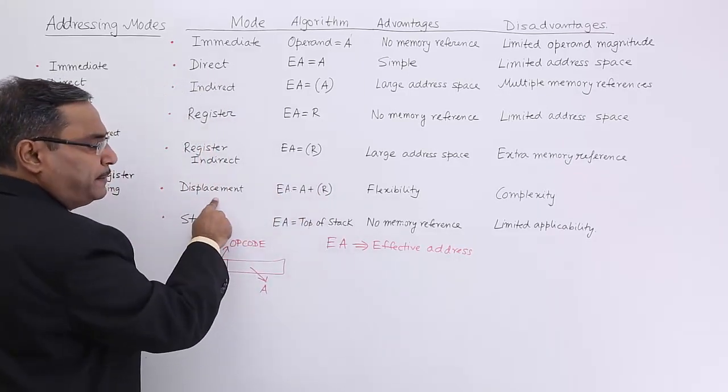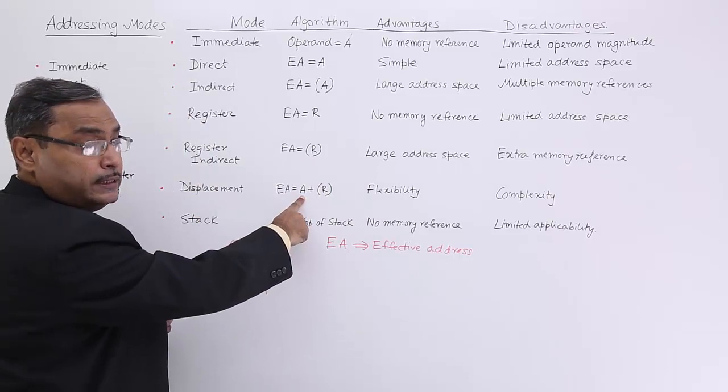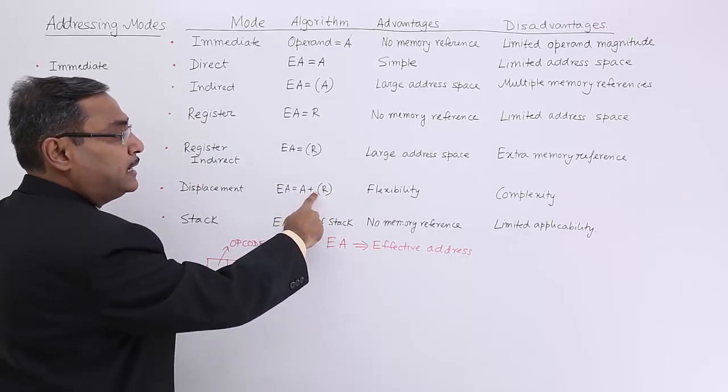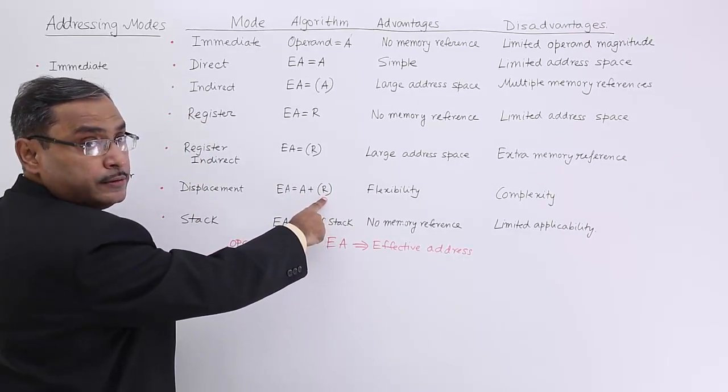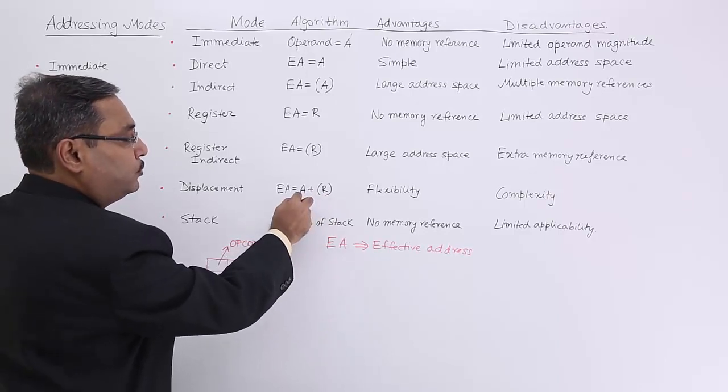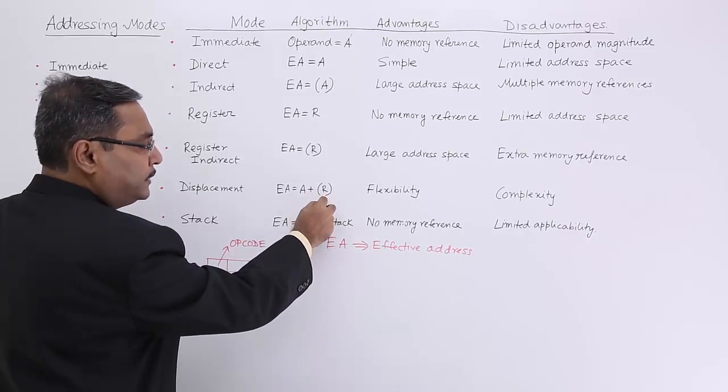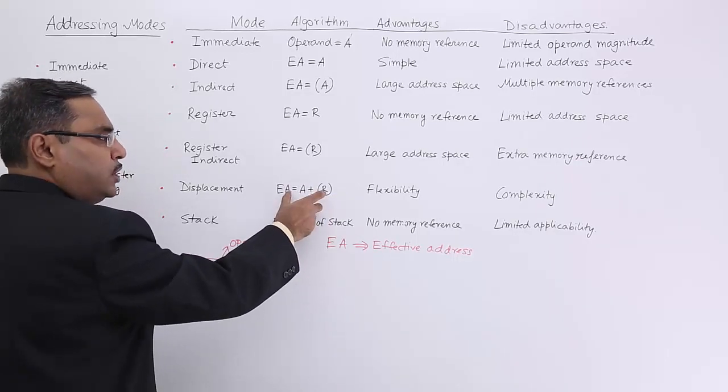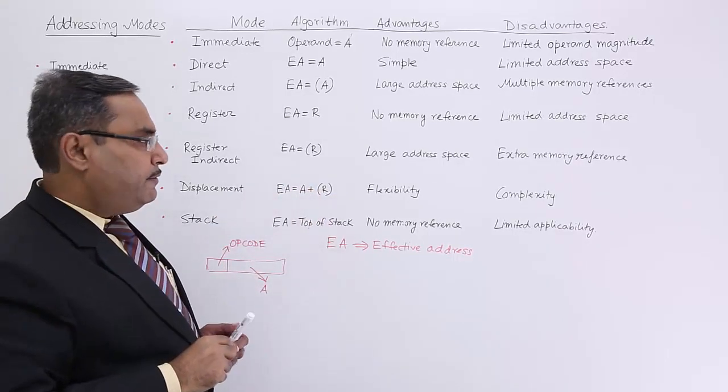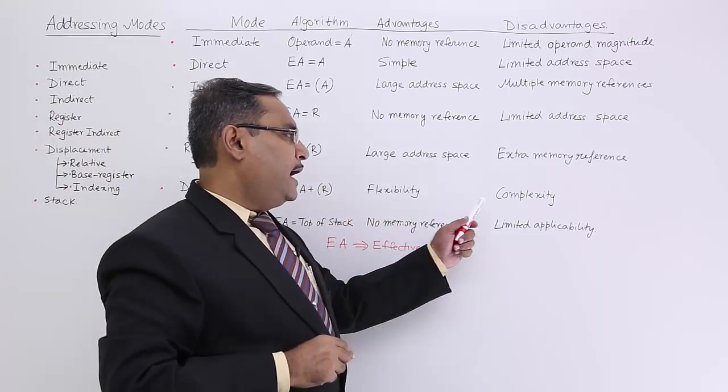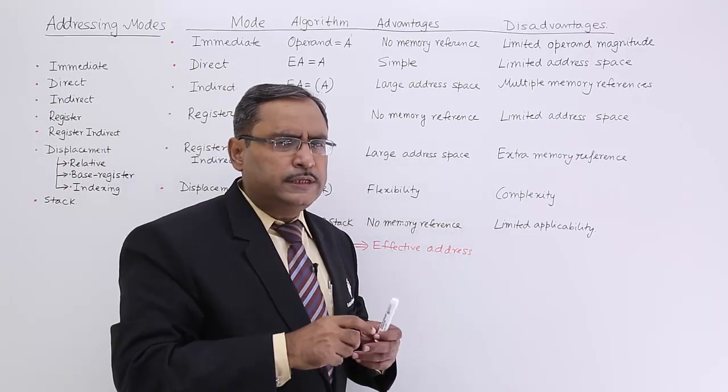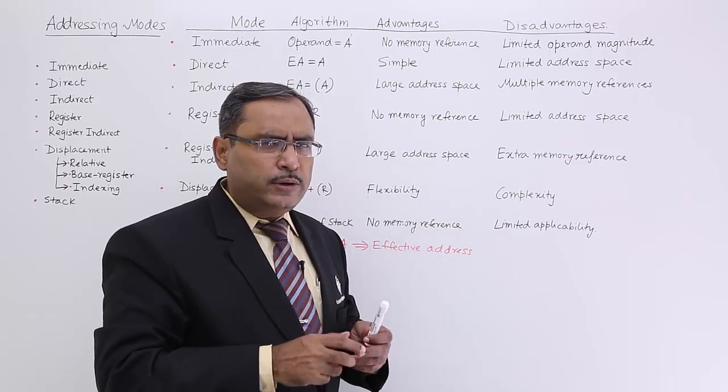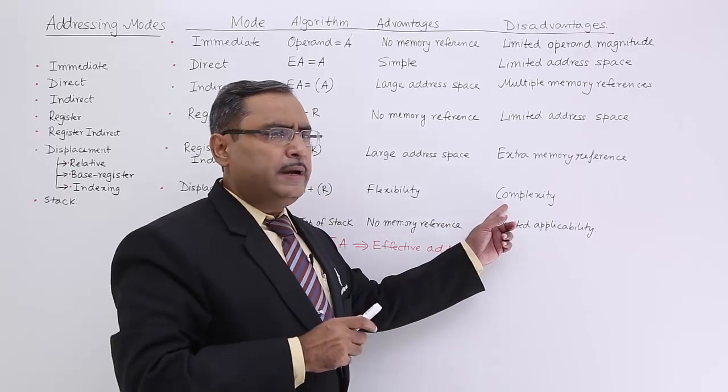This is the case displacement. Here we will be having this base address plus register's content. There is offset. Base address or the offset, it is containing the base address, it is the offset, whatever it is go on adding then you are getting this effective address. And it is flexible, obviously to calculate this operand to get the operand it is little bit complicated.